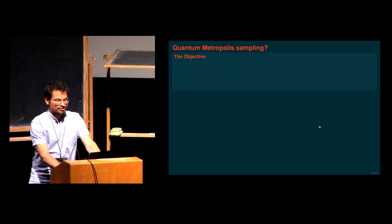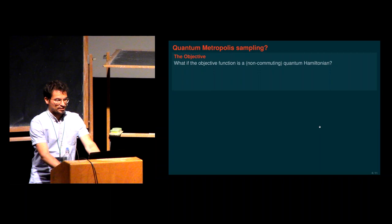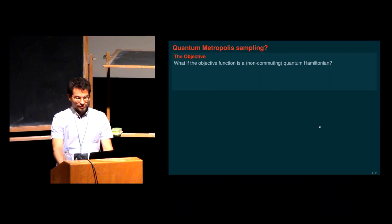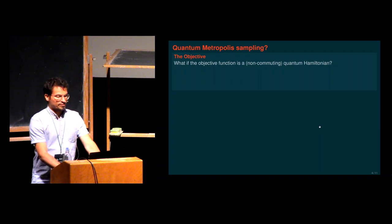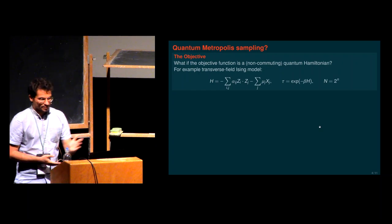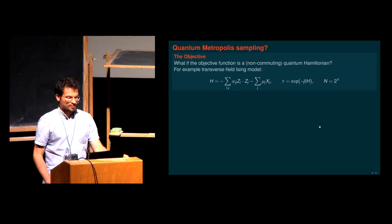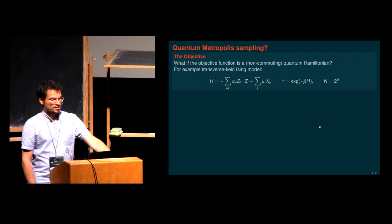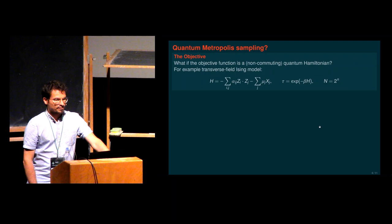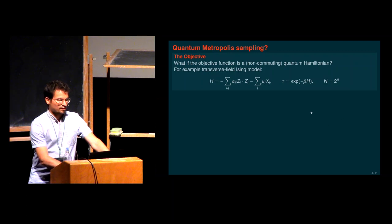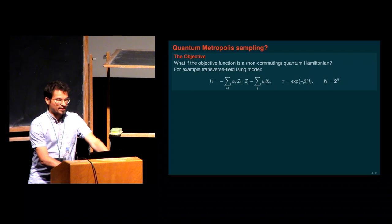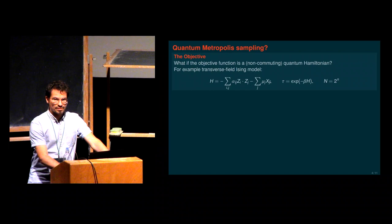Now let's try quantum metropolis sampling, where the objective function — the Hamiltonian — is non-commuting, which causes a lot of trouble. For example, in a classical spin system, if you replace Z operators with X operators, then suddenly your Hamiltonian has non-commuting terms and everything becomes potentially much more difficult. The goal is to prepare the quantum Gibbs state on a quantum computer, using an analogous version to the discrete-time Metropolis-Hastings algorithm.